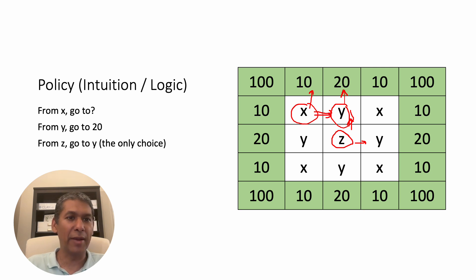So that means we should be going in this direction. So the answer is from X go to Y, and that's just our policy. There's just a little bit of intuition here that from X we go to Y, trying to get to 20 as opposed to trying to go to 10. From Y we have to go to 20. That's the easy one. From Z we have to go to Y. That's our only choice.